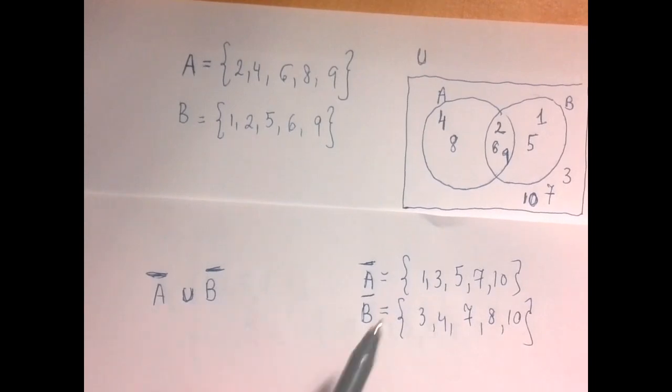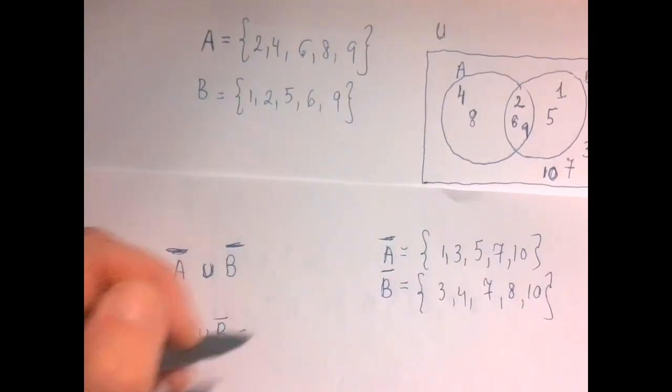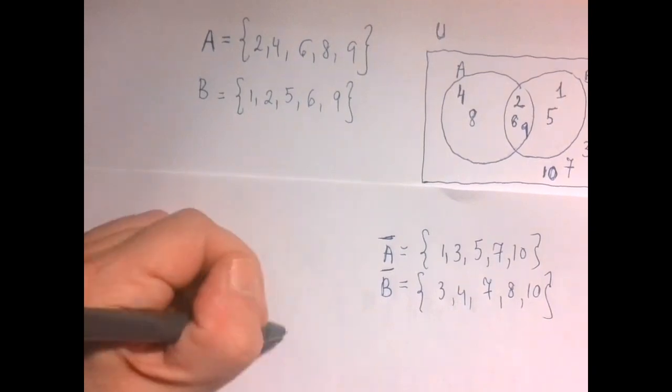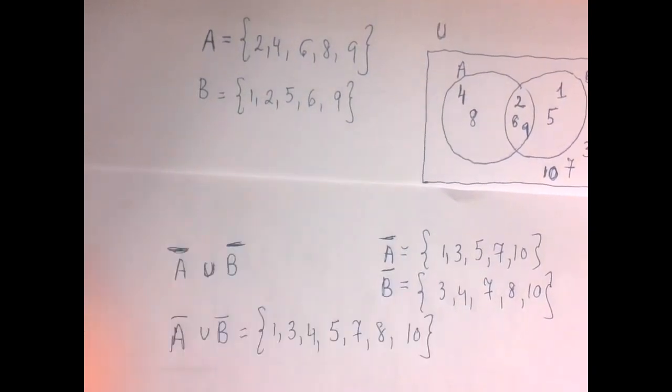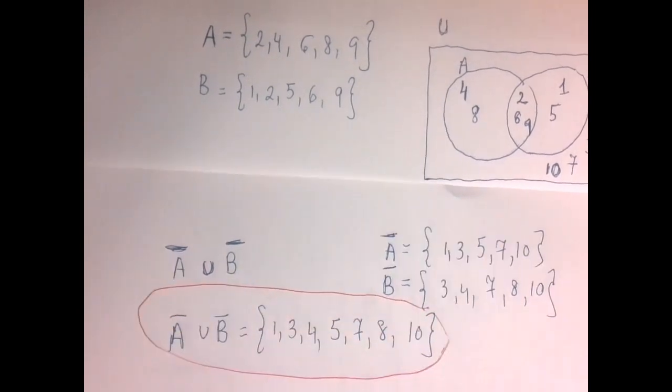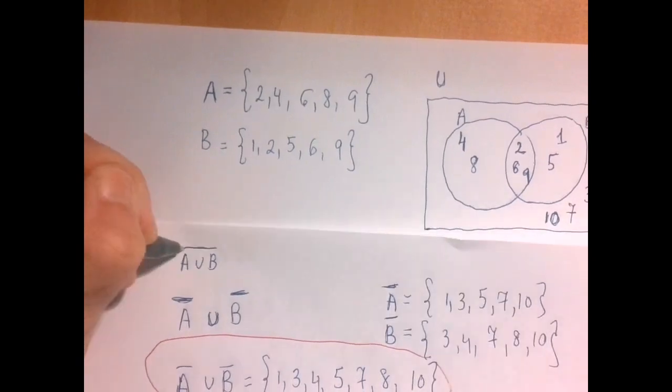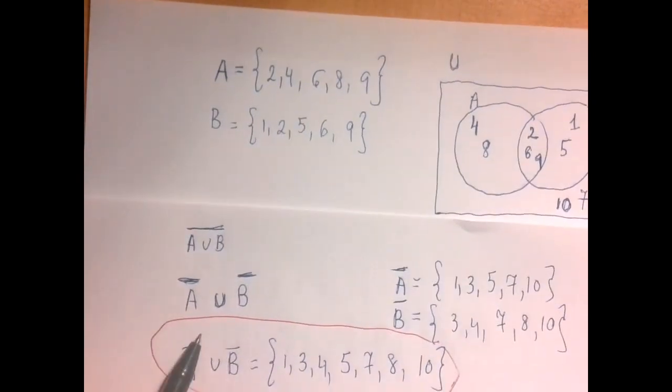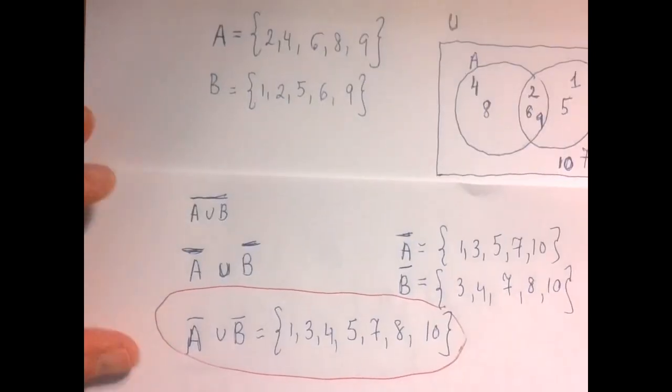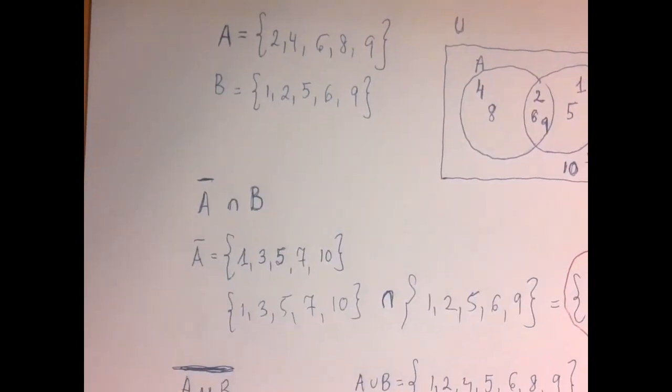So now we just take the union of these 2. Basically, we just throw all these together into a single set. So we get 1, 3, 4, 5, 7, 8, 10. So probably the most important thing here is that these 2 are very different. The complement of the union and the union of the complements, the answers were very different. The complement of A union B was much smaller than the union of the complements.